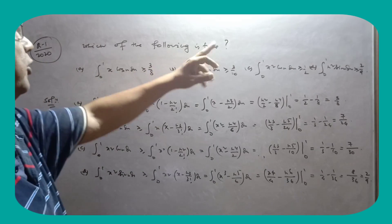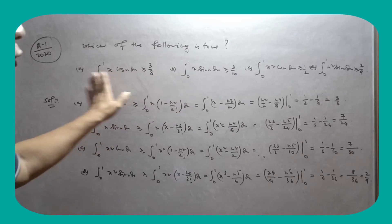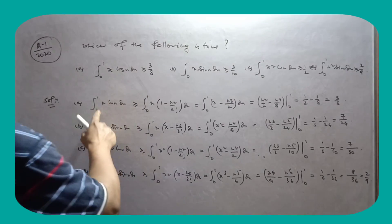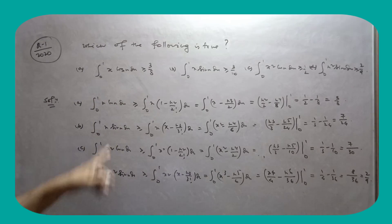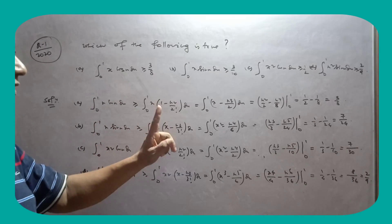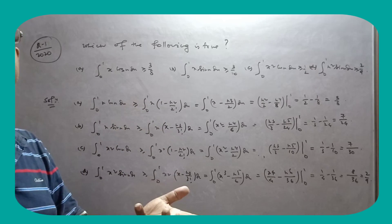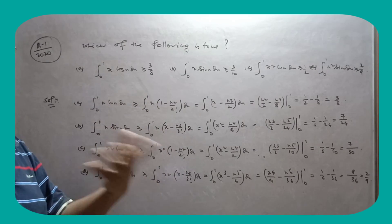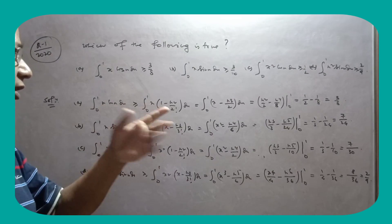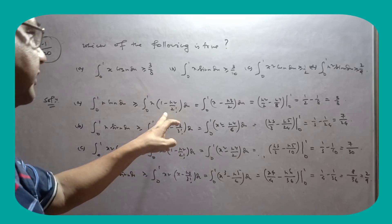Now which of the following is true, so there's 4 options. Now what you have to do, dekho, 0 to 1 x cos x dx, cos x ka expansions likha hai. So here cos x ka expansions kya tha, 1 minus x square by 2 factorial plus x square by 4 factorial, o sare higher power ko neglect kar diya.